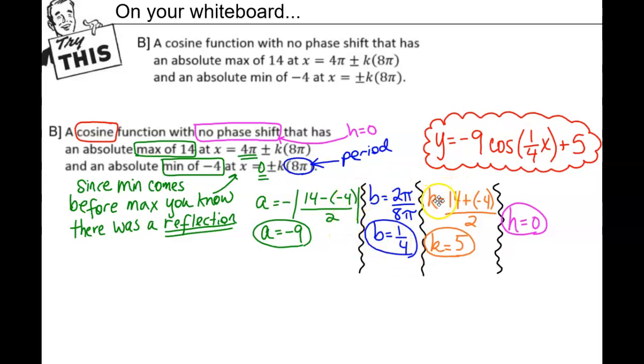To find the vertical displacement, we average the absolute extrema: (14 + (-4))/2 = 10/2 = 5. Since there's no phase shift, h = 0. So the equation is y = -9 cos(1/4 x) + 5.